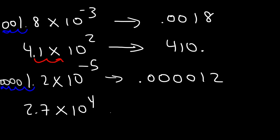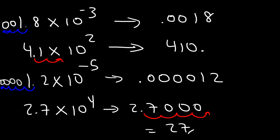And for the last one, 2.7 times 10 to the 4 — we move the decimal right 4 spaces — giving 27,000. Hopefully this video gave you a good introduction into scientific notation and how to convert back and forth into standard notation. Thanks for watching.